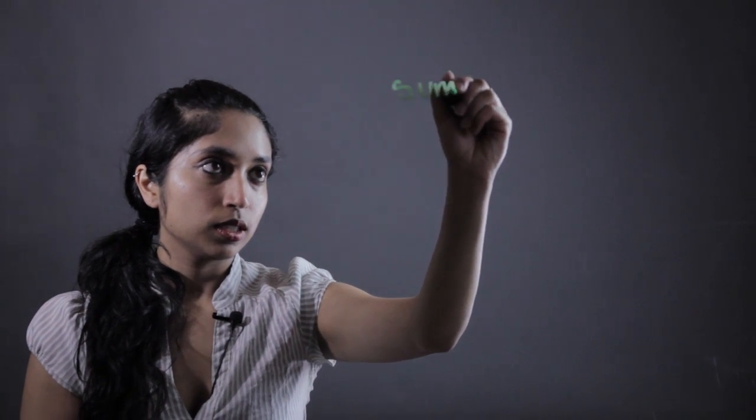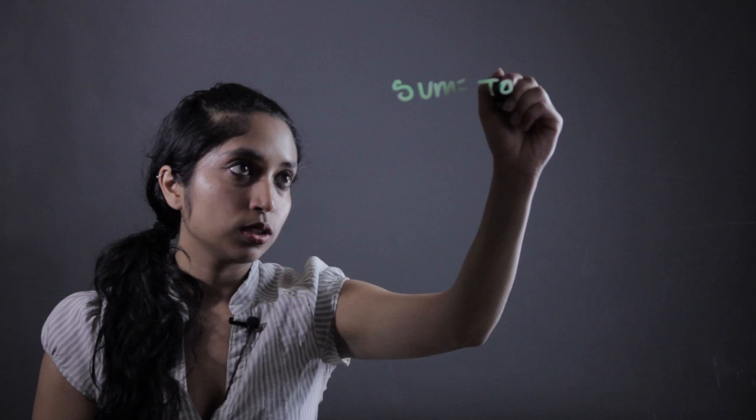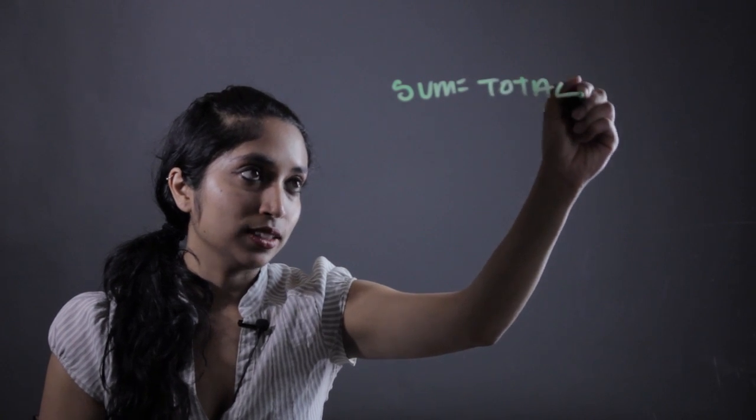And the simple answer to that question is because the sum of the number of decimals that you're multiplying is going to give you the total number of decimals in your answer. So I'm going to write that down. The sum is going to give you the total in that answer.